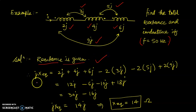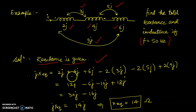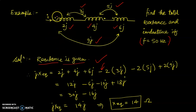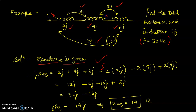Since reactance values are given, jX equivalent equals j2 plus j4 plus j6 with mutual terms added according to sign. For M12: at the dot of inductor 1, current enters, and at the dot of inductor 2, current leaves — so put a minus sign, giving minus twice j3. For M23: at the dot of inductor 2, current is leaving, and at the dot of inductor 3, it is entering — series opposing, so put a minus sign, giving minus twice j5.